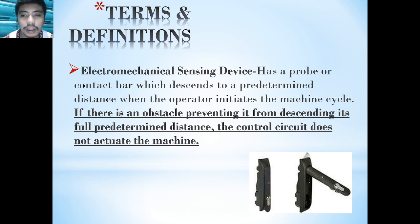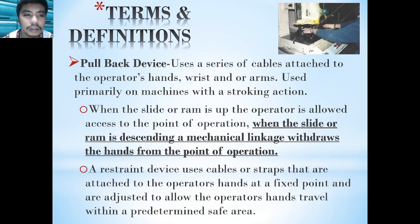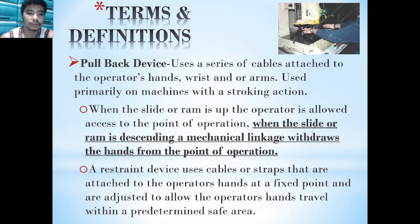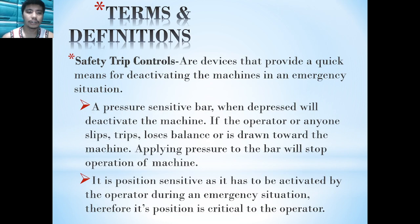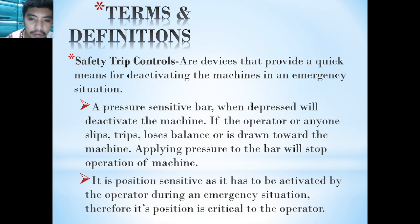Electromechanical sensing devices use a probe or contact bar designed to prevent further movement when the operator initiates the machine cycle. Pullback devices use a series of cables attached to the operator's hands or arms, used primarily on machines with stroking action. Safety trip controls consist of a pressure-sensitive bar — when the operator loses balance or is thrown toward the machine, applying pressure to the bar will stop operation of the machine.